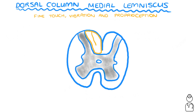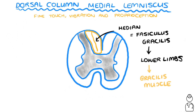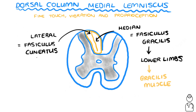In reality, a thin septum actually splits this tract into two. The most medial tract is known as the fasciculus gracilis, and it carries sensory information from the legs — you can easily remember this since gracilis is actually a muscle in the leg. The lateral tract is known as the fasciculus cuneatus, which carries sensory information from the arms.